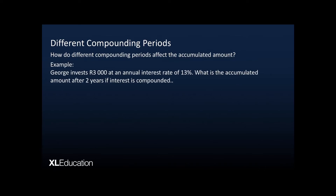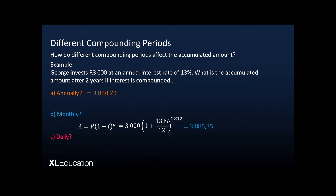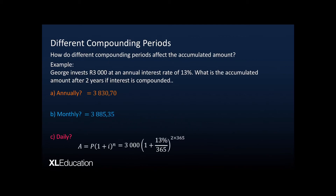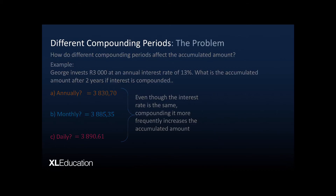So how do different compounding periods affect the accumulated amount? George invests 3,000 rand at an annual interest rate of 13%. After two years: compounded annually gives 3,830 rand and 70 cents; compounded monthly — dividing the rate by 12 and multiplying years by 12 — gives 3,885 rand and 35 cents; compounded daily gives 3,890 rand and 61 cents. The more frequently you compound, the higher the accumulated amount.